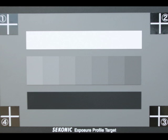The process I'm going to show you is called camera profiling, and Sekonic has developed a simple way to do this. The first step of camera profiling is to take a series of bracketed exposures of the Sekonic test target, available from your photo dealer.